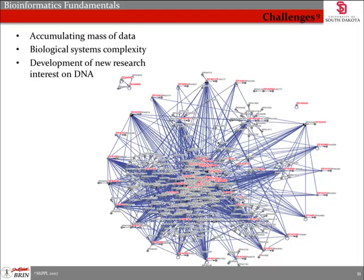The figure here represents the interactions of approximately 100 genes. The human genome holds nearly 30,000 genes. It is hard to imagine the complexity of such interactions. These are some of the challenges bioinformaticians deal with when trying to model biological systems.